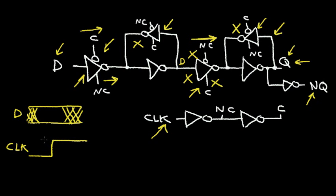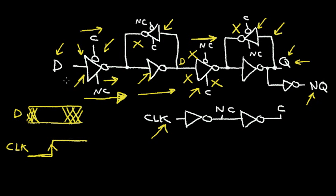So let's see what happens here. Here I've drawn the data signal at the input and the clock signal. When the clock signal is low, the data is allowed to enter this first latch, but it's blocked from entering the second latch — it can't get any further than the two equivalent inverters, this being the first inverter and the second inverter. But when the clock transitions high, I shut off the data source and put this input tri-state driver in the off state, and I allow the input tri-state driver of the second latch to pass the data onto the Q and the not-Q.